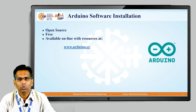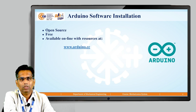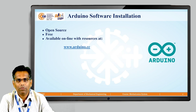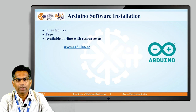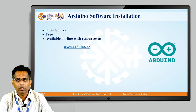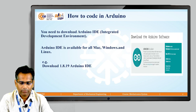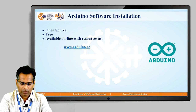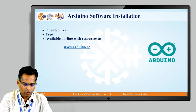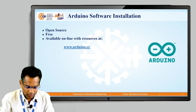Already we know this Arduino is open source software. You can download it freely from Google or any internet source. It will be available at www.arduino.cc. If you go there, you have to see this symbol there.